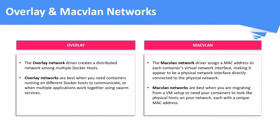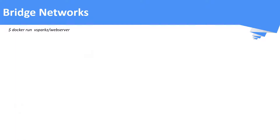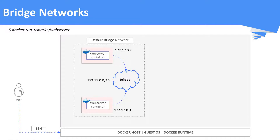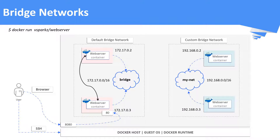Now we will see a diagrammatic representation of how default networks look like. For bridge network: by default, a bridge network would have been created by the Docker host in the IP range of 172.17.0.0/16. When you run a container by default it picks the default bridge network. You can also create a custom user-defined bridge network.